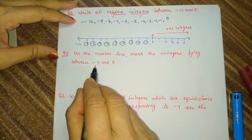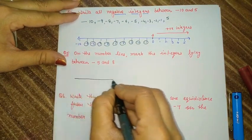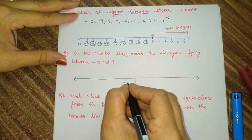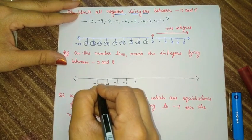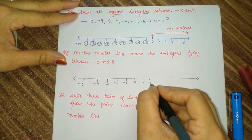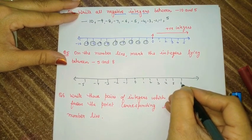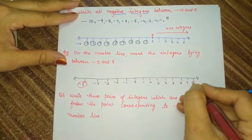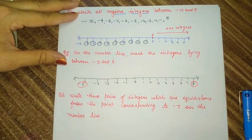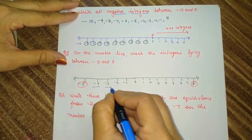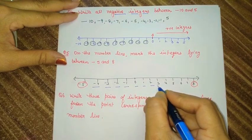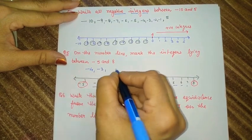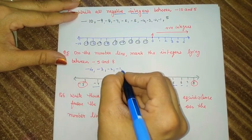Same for question number 5: they ask us to write all the integers between minus 5 and 8. We have to write all the integers between these two numbers. All the integers are minus 4, minus 3, minus 2, minus 1, 0, 1, 2, 3, 4, 5, 6, and 7. So these are the integers between minus 5 and 8.